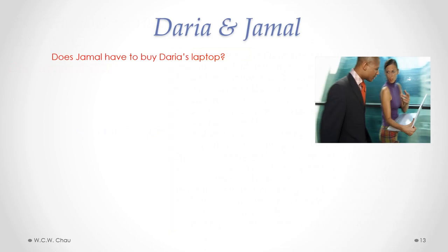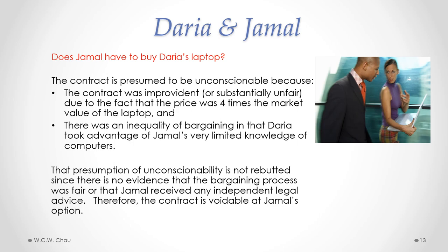Since Daria is obviously trying to rip off Jamal, does Jamal have to buy Daria's laptop? The contract is presumed to be unconscionable because the contract was improvident — the price was four times the market value of the laptop, $2,000 versus $500 — and there was an inequality of bargaining power in that Daria took advantage of Jamal's very limited knowledge of computers. That presumption of unconscionability is not rebutted since there is no evidence that the bargaining process was fair or that Jamal received any independent legal advice. Therefore, the contract is voidable at Jamal's option.